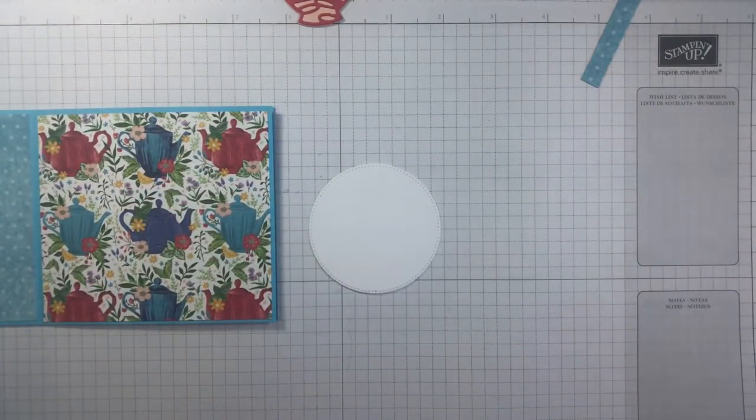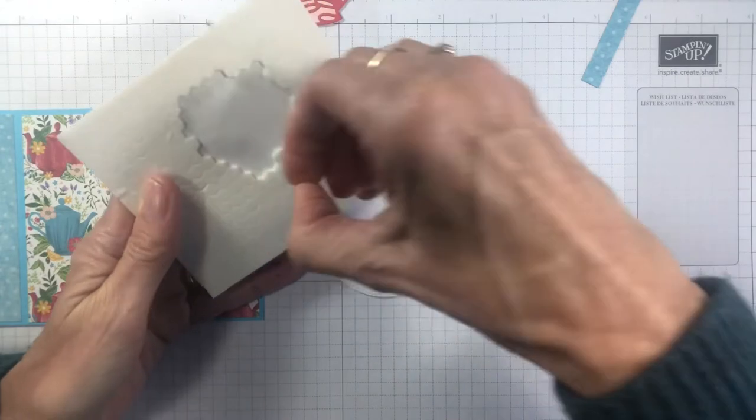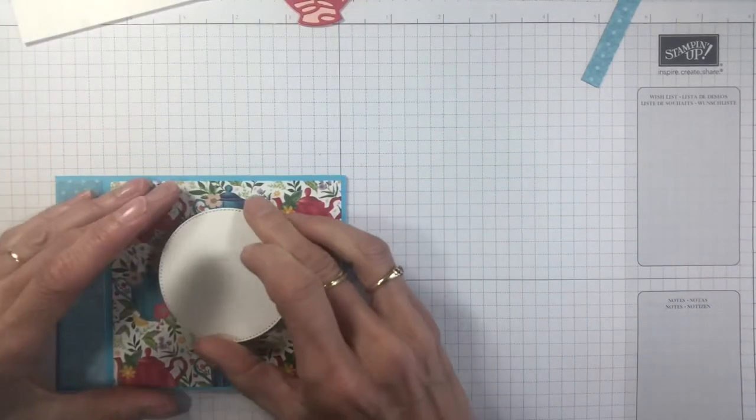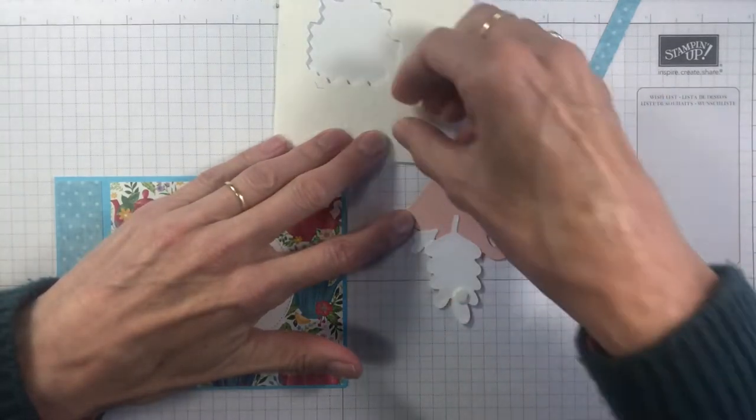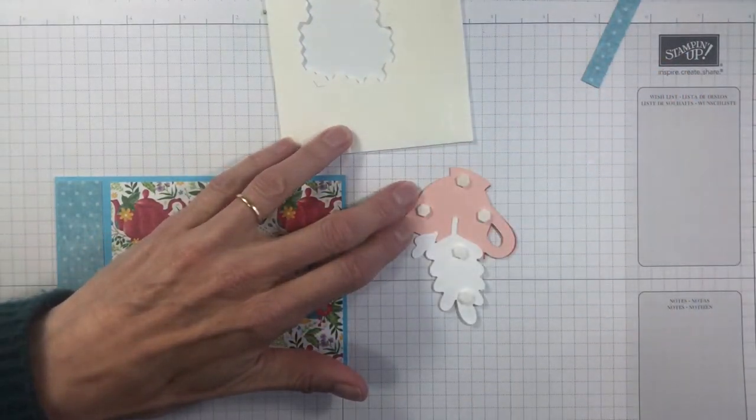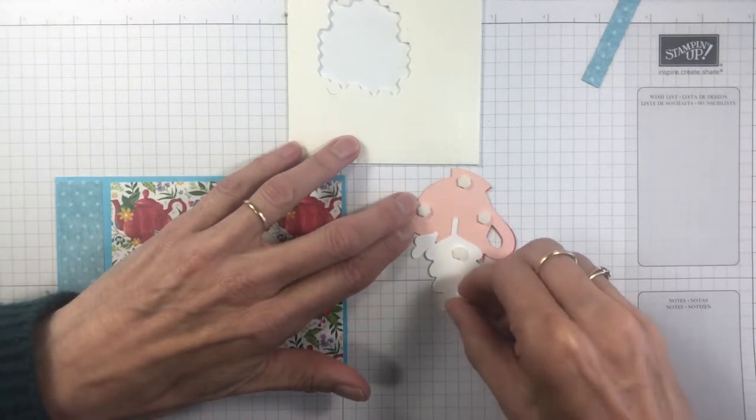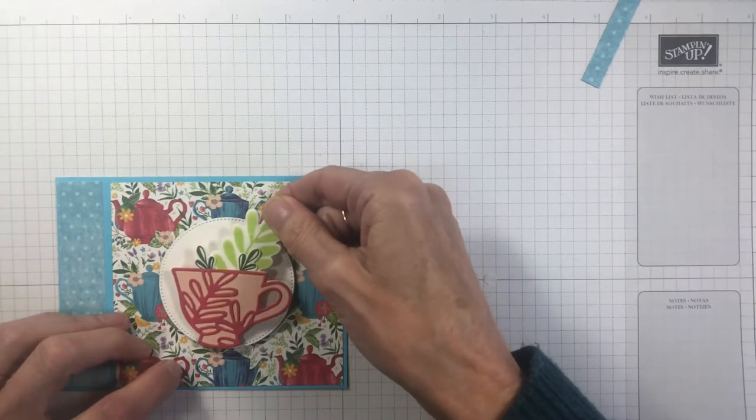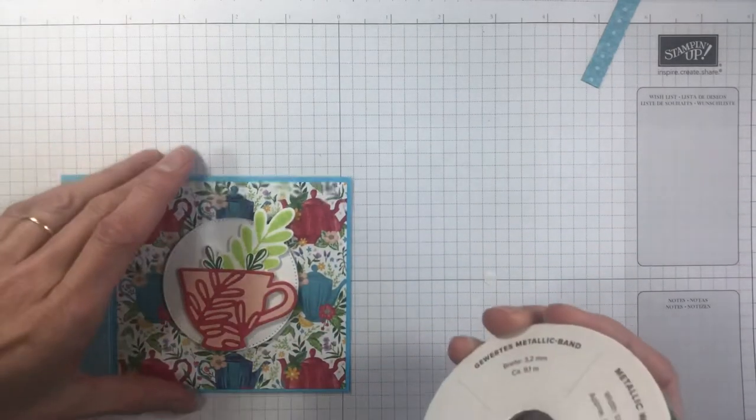We'll want to add dimensionals now just on our circle. Just add a few around the circle. And add a few on the back of your teacup too, and your leaf. That's why I like the little ones - they seem to go further. You don't need a huge amount of dimensionals. Center that on there. I like to put that on first before I tie the ribbon on, just so then I know where to position the bow.